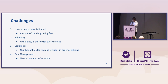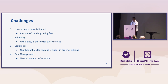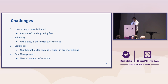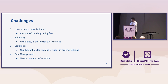To summarize the challenges with all existing solutions: first, local cache storage space is limited and the amount of data is growing fast. Second is reliability, because on cloud and Kubernetes, availability is key for every service. Third is scalability — the number of files for training is now huge, on the order of billions — so if the metadata or some part of the system becomes a bottleneck it is not acceptable. And last is data management; we don't want any manual work.